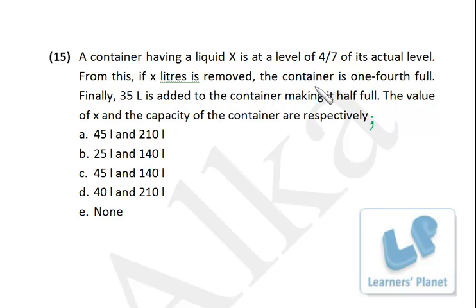See this line: the container is one-fourth full. I suppose the total capacity of the container is T, right? So after this removal the container is one-fourth full, so it's T by 4. One-fourth of the total capacity, and if you are adding 35, you are getting half full, right? That means T by 2.